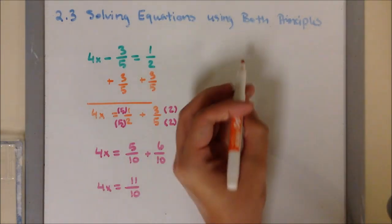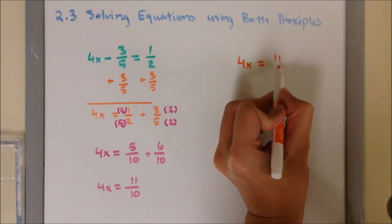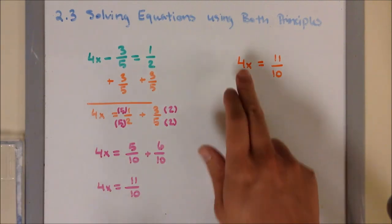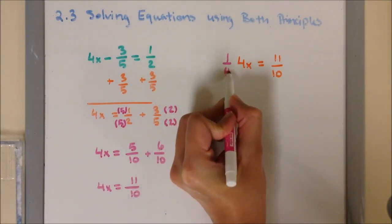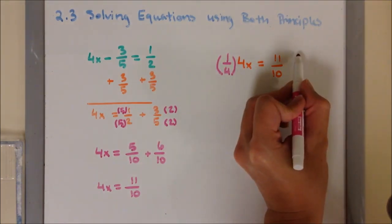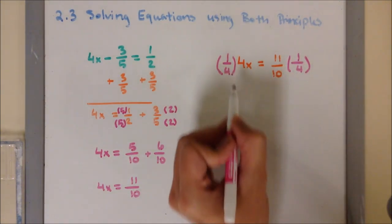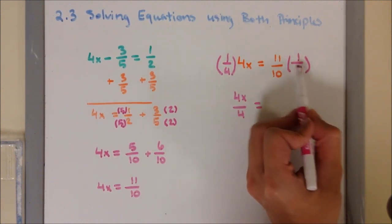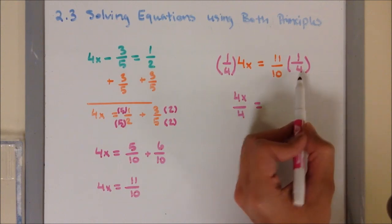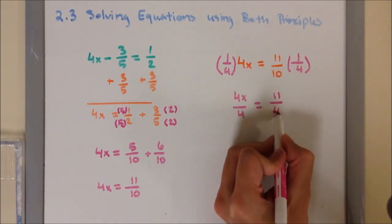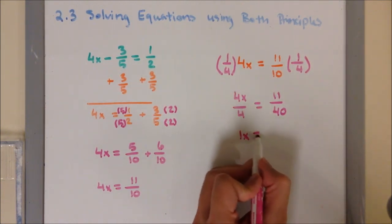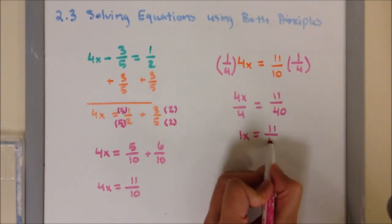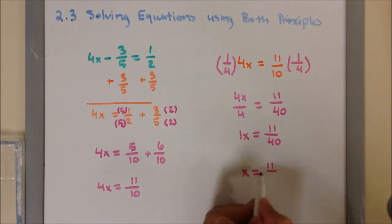I'm going to write it up here: 4x equals 11 over 10. Then, I'm going to apply the multiplication principle. The reciprocal of 4 is 1/4. Multiply it on both sides. This will become 4x over 4 equals — fraction multiplied by another fraction, numerator times numerator, denominator times denominator — so it will be 11 over 40. Double checking, there is nothing in common between 11 and 40, so it will simply stay as 11 over 40.